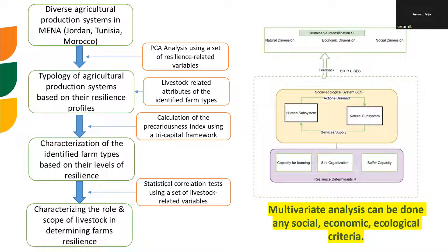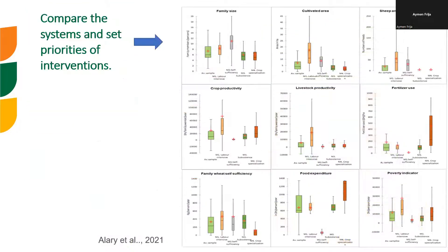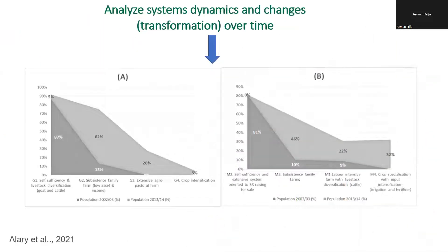In some of our typologies, we try to make typologies of socio-ecological systems, not only social, economic, or structural typologies. These typologies will help us compare systems and set the priorities of interventions for each type. They can also help us analyze system dynamics and changes or transformation over time — something which is under-investigated in the literature. Typologies over two time slots can help us look at how a farm type is evolving through time, understanding dynamics and transformations within these systems and checking if they are getting more sustainable or more intensified.